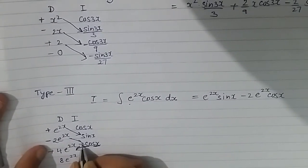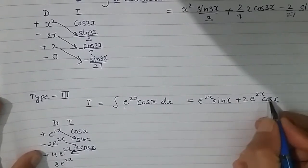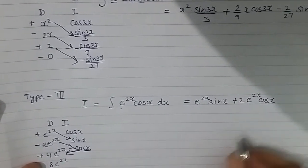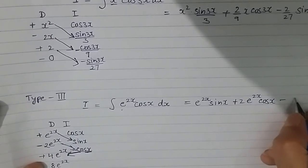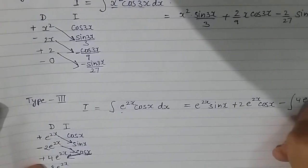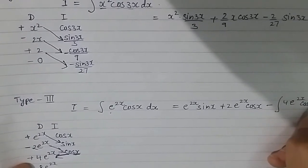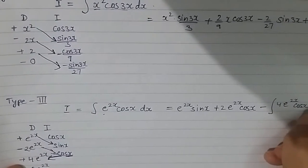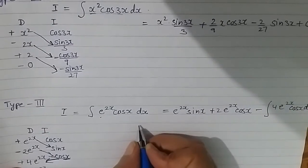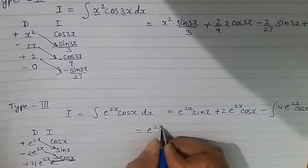The sign at the stopping row is positive, so −cos x gives +2e^(2x) cos x. Then I must subtract the integral of the last diagonal product: − ∫4e^(2x) cos x dx. Writing it out: e^(2x) sin x + 2e^(2x) cos x − 4 ∫e^(2x) cos x dx.